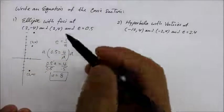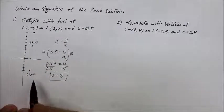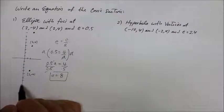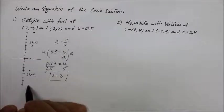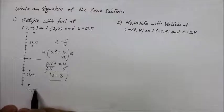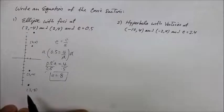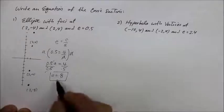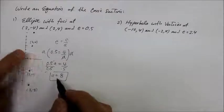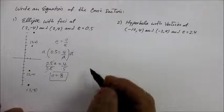So a is eight — the distance from the center to the vertex is eight units away. The vertex is at (2, 8) and the other at (2, -8). Now I also need to find b, the co-vertex, to give me the full picture of the ellipse.